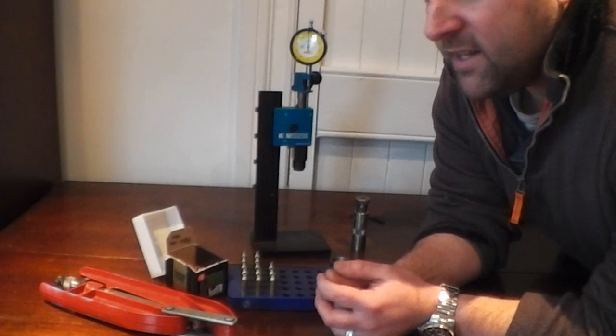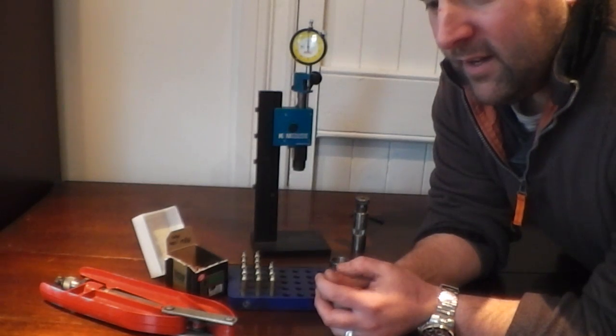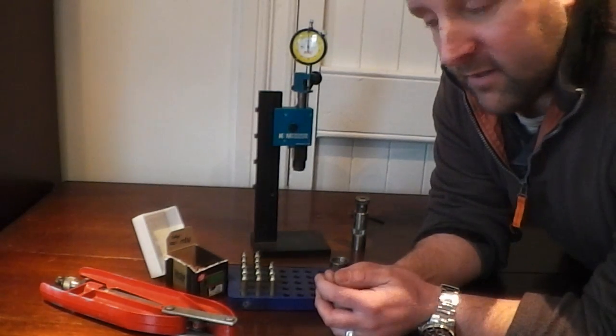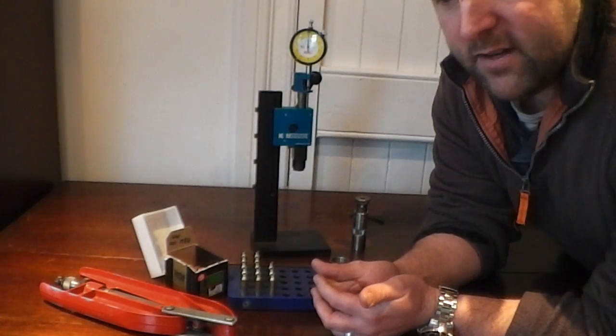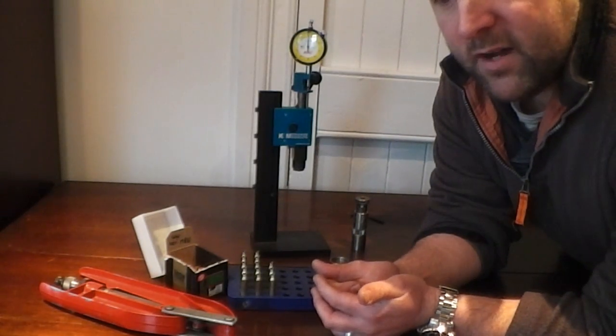For example if you're resizing and you feel that some are very hard, you know there's unevenness, you might think about annealing to standardize the hardness of the brass.